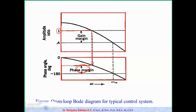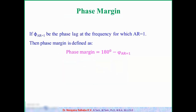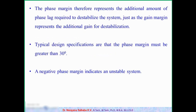Mathematically, phase margin is defined as: phase margin = 180° − phi, where phi is the phase angle at AR equal to 1. For a stable system this value should always be positive. For safety purposes, the phase margin value is maintained greater than 30 degrees. A negative phase margin indicates an unstable system, whereas a positive phase margin indicates a stable system.